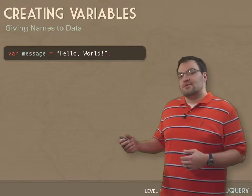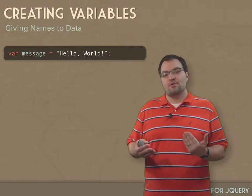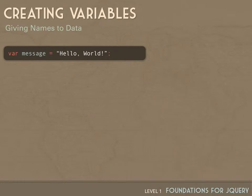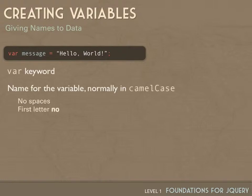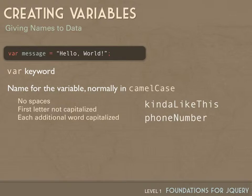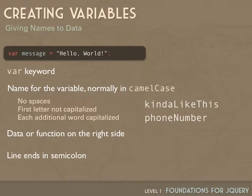You need variables to give names to your data. Whenever you're writing a program, you need a way to address your data, and variables are how we do that. In JavaScript, you've got the var keyword followed by the name of the variable, then the data or the function on the right side. So in this case, I've got the var keyword, the name message, equals, and then a string, hello world.